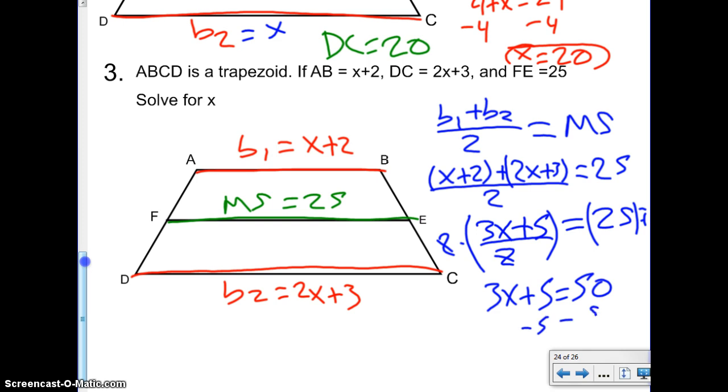Subtract by 5 on both sides. 3X equals 45. Divide by 3. And X equals 15.